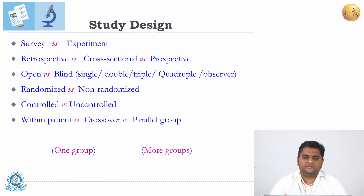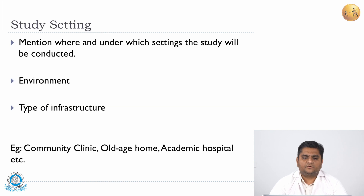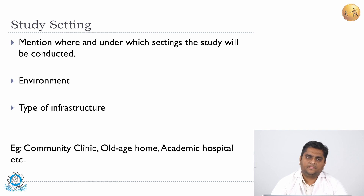When describing the study design, state whether it is a survey or experiment; what type of survey; whether it is retrospective, cross-sectional, or prospective; whether it is blinded — open, double-blind, single-blind, or triple-blind; whether it is a randomized or non-randomized trial; controlled or uncontrolled; or within-patient crossover or parallel. Depending on which study design you are following, it must be mentioned clearly in the protocol. Study setting is the place where you will be conducting your study — mention where and under which settings it will be conducted, the environment, and type of infrastructure. Examples include community clinics, old age homes, academic hospitals, factory or industrial settings, and schools.